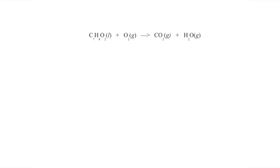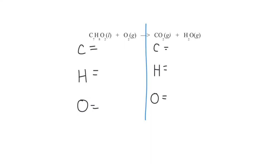Let's try one more example — this one's a little bit more challenging. Again, I'm going to separate it into two sides and list all the elements. In this case we don't have any metals, so we skip right to the non-metals: carbon, hydrogen, and oxygen. I do the same on the other side and list the amounts. On the left I have seven carbons, eight hydrogens, and four oxygens total (two here plus two more). On the right: one carbon, two hydrogens, and three oxygens.